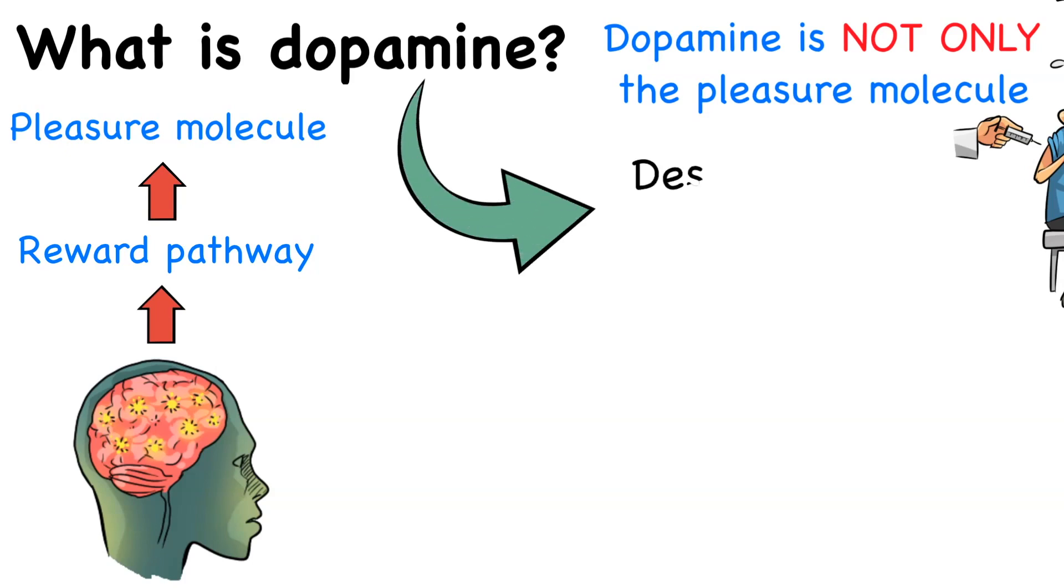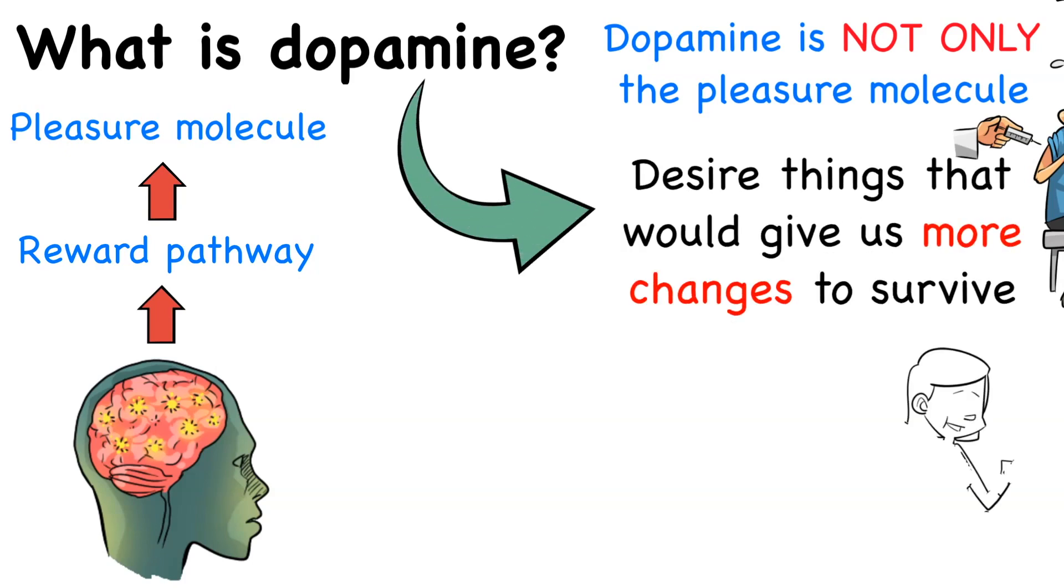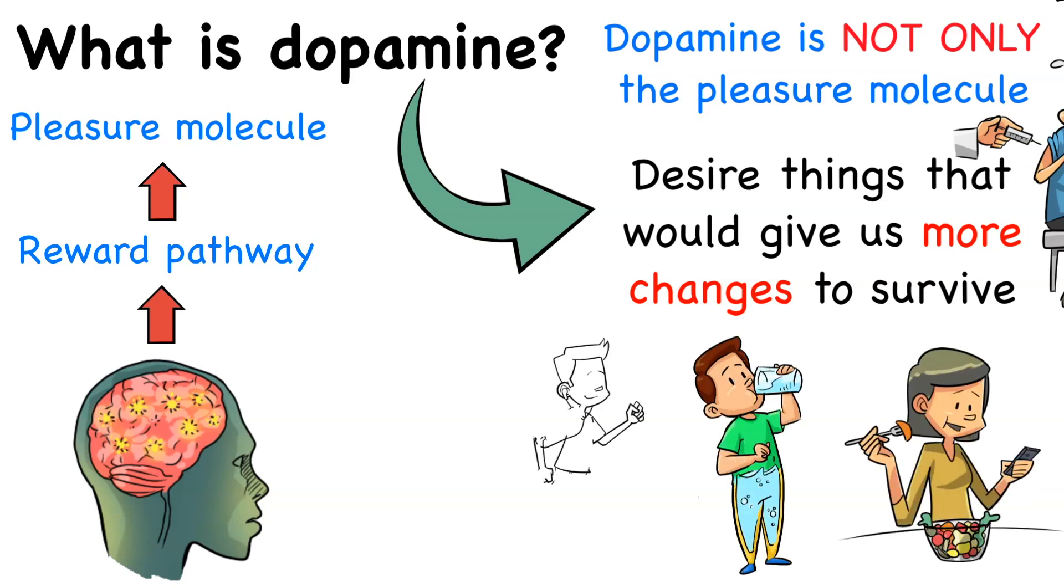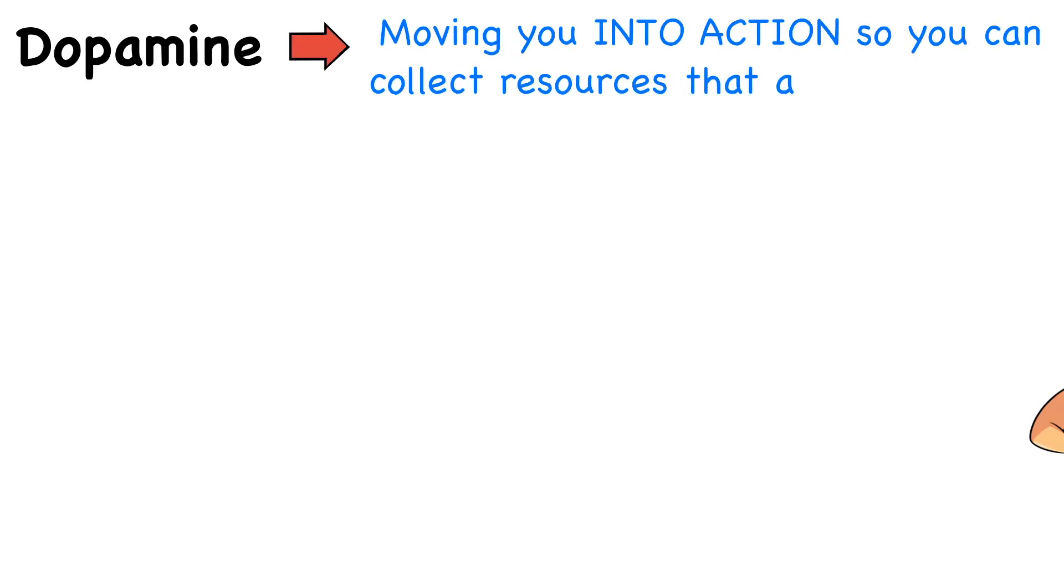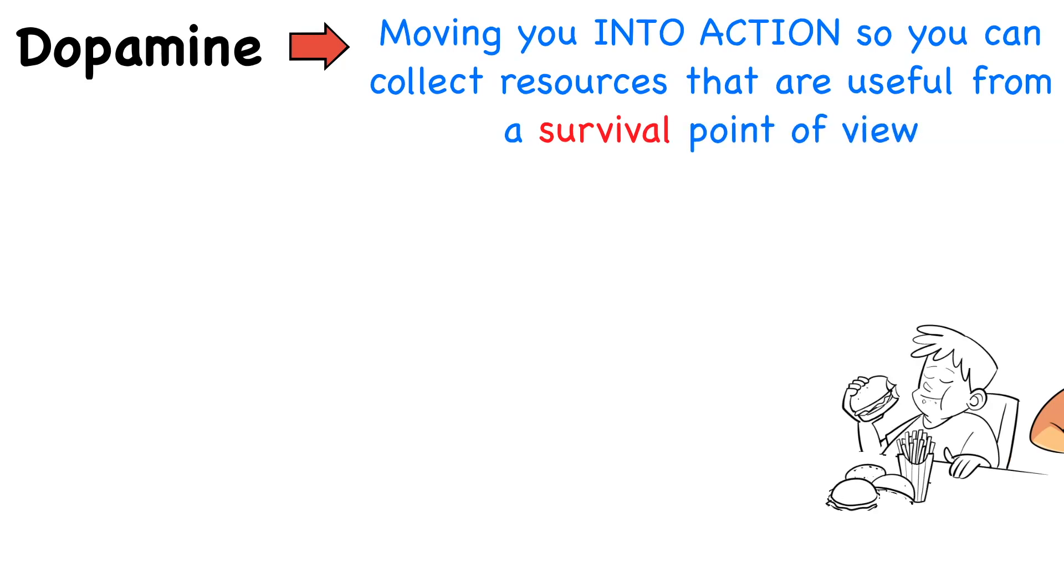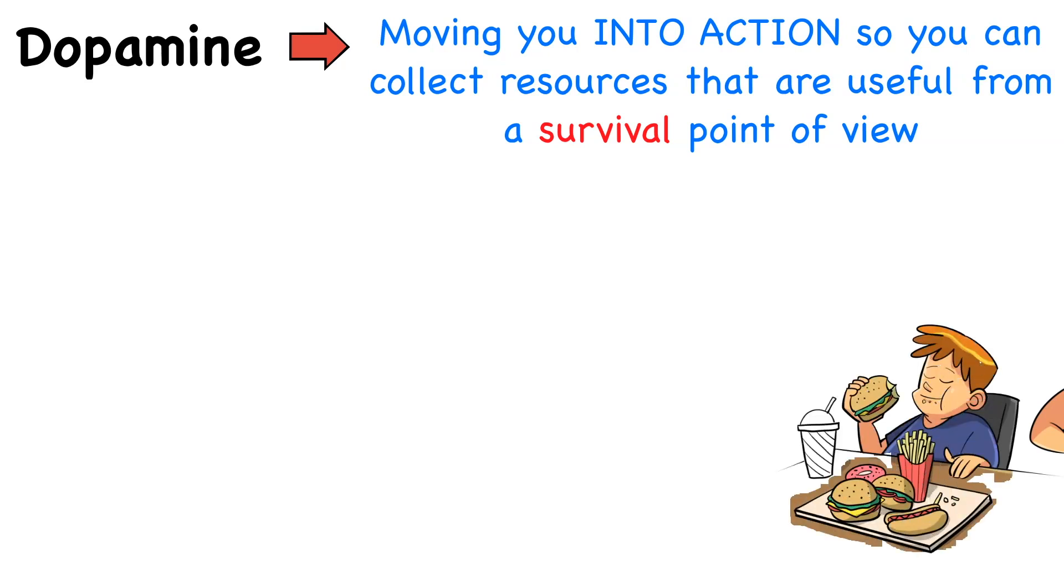Dopamine's main job is to make us desire things that would give us more chances to survive. For example, eating when hungry, drinking when thirsty, getting fit and dressing better to have more sex, and winning a competition to move up the social hierarchy. When you see tasty food, you are immediately driven to eat it because high caloric food will provide you with more energy so you can live more time.